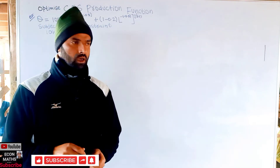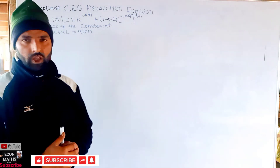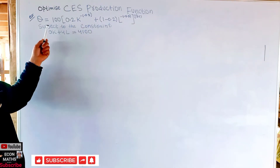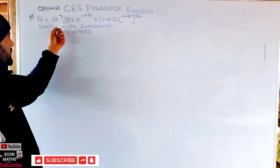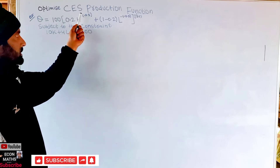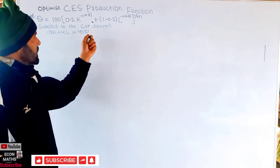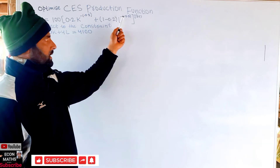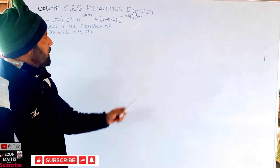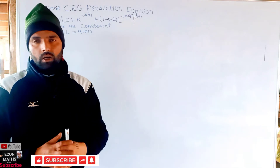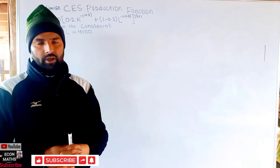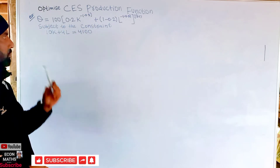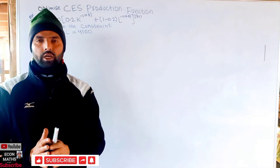The question is: optimize the CES production function Q = 100 × (0.2 K^(−0.5) + 0.8 L^(−0.5))^(−1/0.5), subject to the constraint 10K + 4L = 4100.